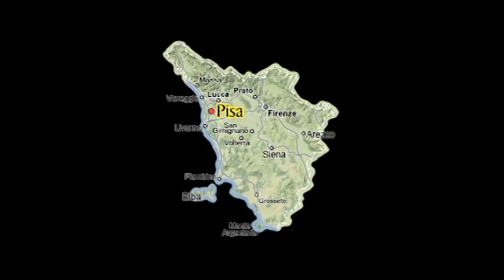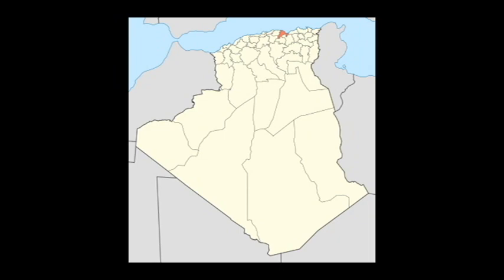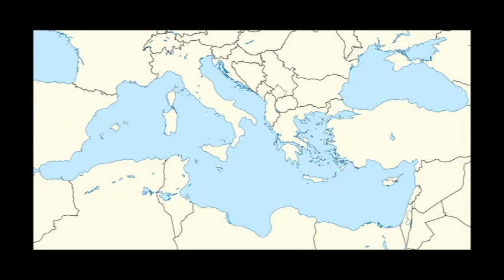Fibonacci was born in Pisa, Italy. He was the son of a wealthy merchant and therefore traveled a lot with his father. He grew up in North Africa where he was educated, and later traveled extensively around the Mediterranean coast. He would have met with many merchants and learned their systems of doing arithmetic.